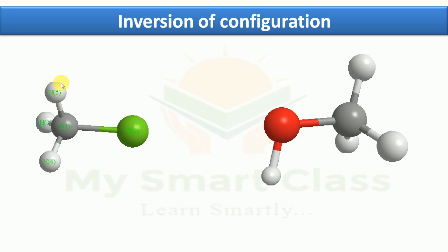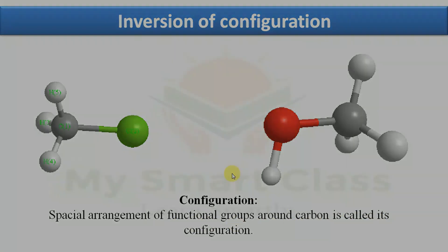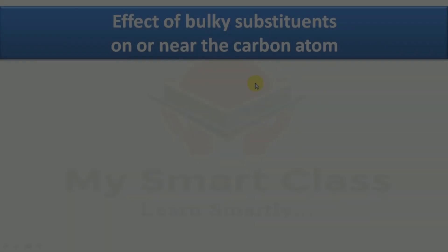In the starting material, the three hydrogens are on the left side of the carbon, but in the product they are inverted to the right side. This is called inversion of configuration. Configuration means the spatial arrangement of functional groups around a carbon atom.